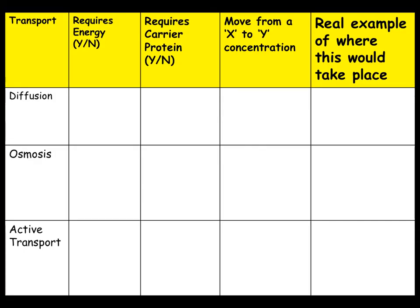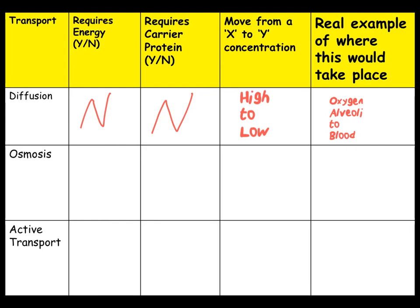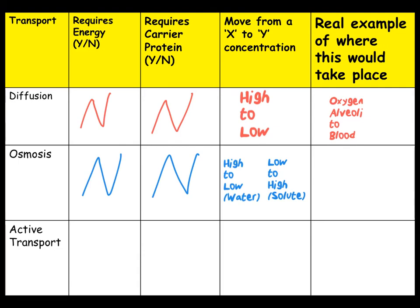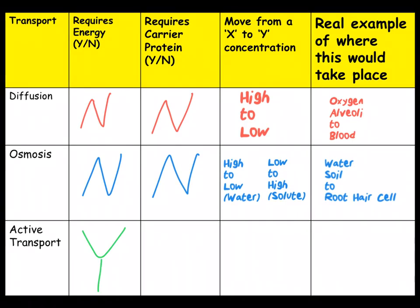Now complete this table to show the differences between the different types of cell transport. For diffusion: it does not require energy, does not require a carrier protein, moves from high to low concentration, and an example is oxygen diffusing from the alveoli into the blood. For osmosis: no energy required, no carrier protein, moves from high water concentration to low water concentration, or from low to high solute concentration — an example is water moving from the soil into a root hair cell. For active transport: energy is required, a carrier protein is required, moves from low to high concentration, and an example is glucose moving back into the blood in the kidney.